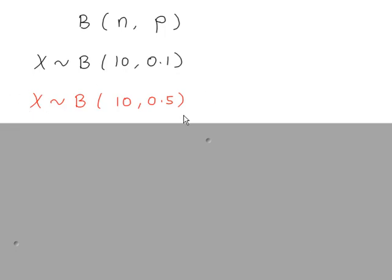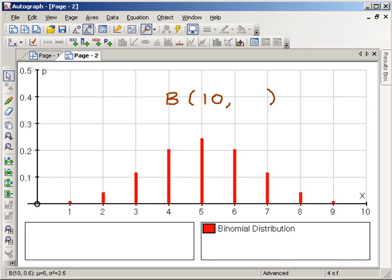In our second binomial distribution, the probability of success is 0.5. So the probability of failure is also 0.5. And what you will find is that the graph is symmetrical. So when p is 0.5, you have a symmetrical graph, so the shape of the distribution is one of symmetry.